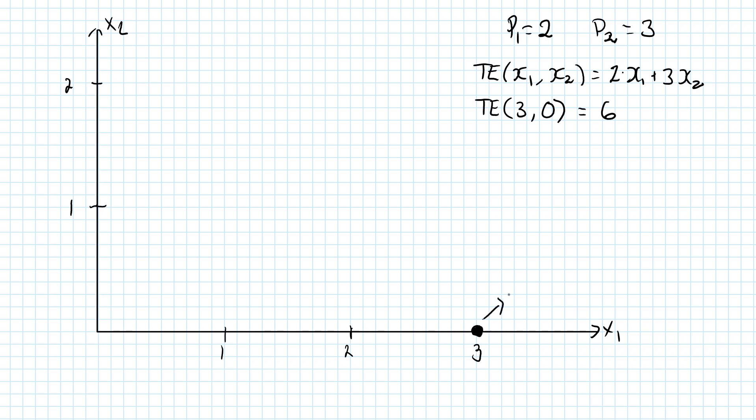This bundle has a total expenditure of 6. In the same way, every point in this Cartesian coordinate system will be associated with a total expenditure whenever we have some prices. So here's a question for you. Can you find any other bundle where the total expenditure is the same 6?